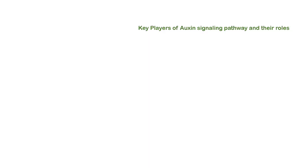We are going to talk about the auxin signaling pathway. First, let's see the key players and their roles. In any signaling pathway, there is one ligand which is the signaling molecule, one receptor to bind with, an inhibitor or activator, and an event of phosphorylation or polyubiquitination. In plants, we see a role of polyubiquitination and involvement of the 26S proteolytic component.